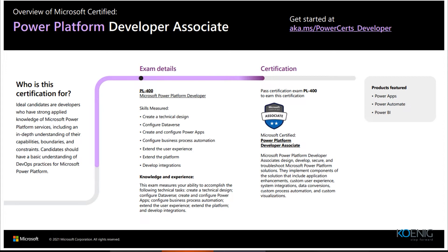Using DevOps, you will be able to orchestrate a number of processes. When we look into the exam details, the exam code is PL — PL stands for Power Platform — and 400 is the series code for this course or certification. You can see how the different categories are available on which your skills will be measured. Please take a moment to understand what skills will be measured for you.